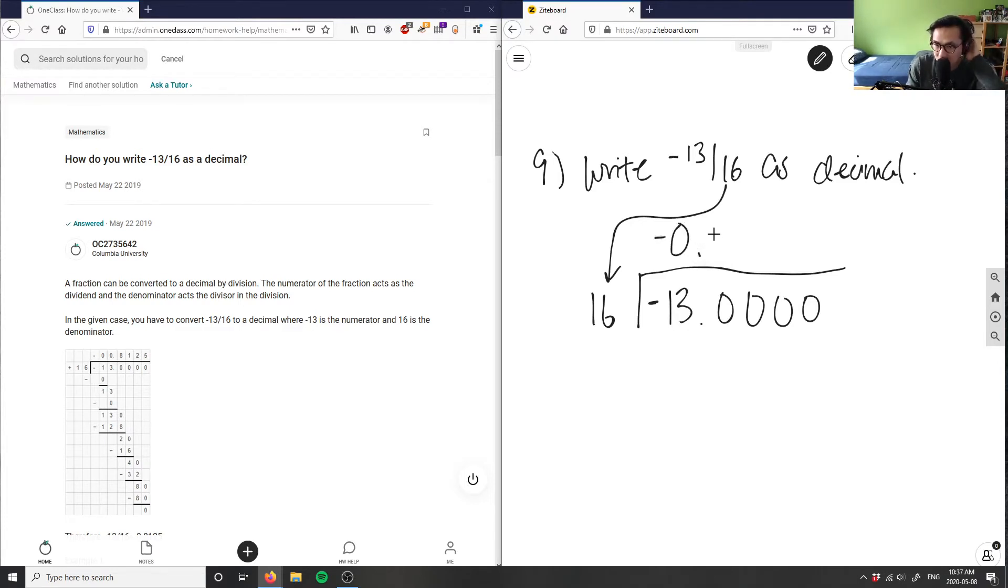And then you would get something here. So 16 times one number is closest to 130. Well, 16 times 10 here equals 160. And 16 times 9 would be, let me do this right now, 16 times 9 is 144. So I would assume 16 times 8 would fit the bill here. So 16 times 8 here, 8 times 6 here is 48. So I have 8 here. I carry the 4. 8 times 1 here is 8 plus 4 here is 12, so I have 128 here.